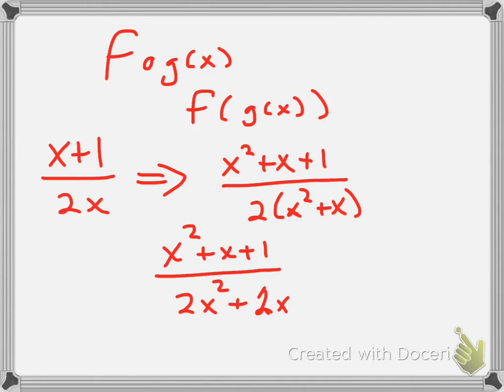So, last thing I want to do with these, if I can, is to simplify. Now, I can factor out a 2x from my denominator, but I can't factor my x squared plus x plus 1 into anything useful. So, we'll just leave it like this. There's our composite function for f of g of x.